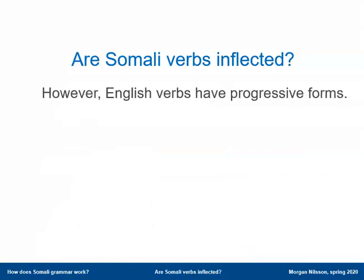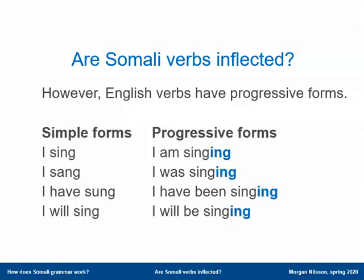Another thing that English verbs do have, which many other European languages do not have as a systematic form, is the progressive form. In English there is always a pair of forms in every tense: a simple present form 'I sing' and a progressive present form 'I am singing', simple past 'I sang' and past progressive 'I was singing', and so on. That's actually very similar to Somali.